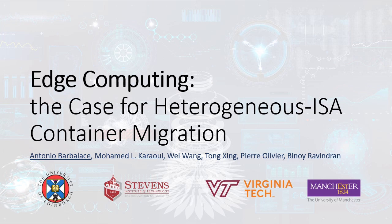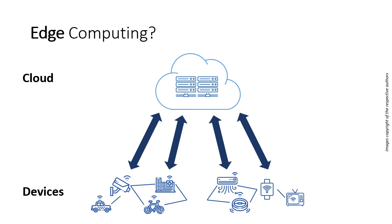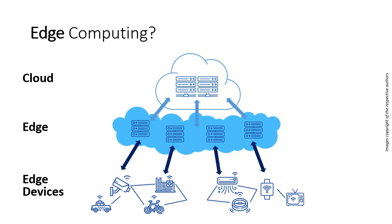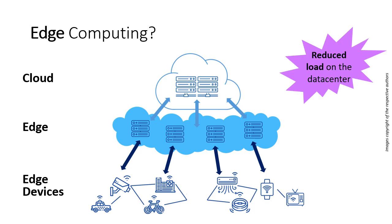Before starting, let's see what edge is and how it differs from the cloud. With cloud computing, all internet services are running on the servers in the cloud. Hence, all devices that need such services are overloading a central place. The edge introduces a new layer of servers between devices and the cloud. Now devices can access internet services on these servers, thus reducing the load on the data center servers. Moreover, servers at the edge reduce servicing latencies.